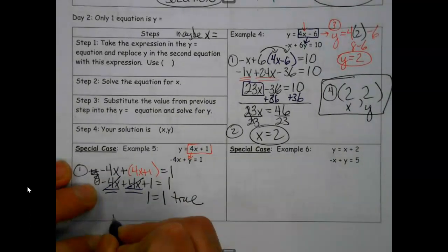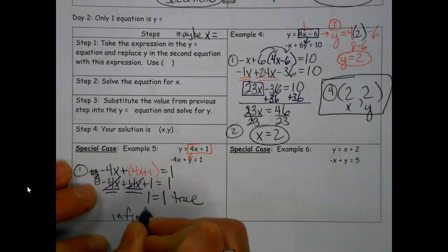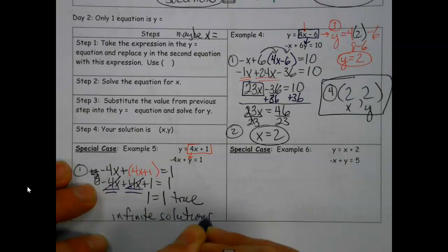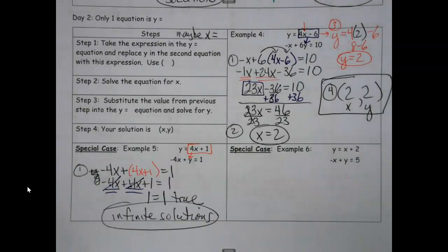Negative 4 and positive 4 cancel. That's kind of funky. And this should look familiar if we were seeing how things were working yesterday. All the x's are gone. I have 1 equals 1 left, which is true. So if this would have been yesterday and I was graphing, I'd be graphing the same line. Same idea, just a slightly different look.